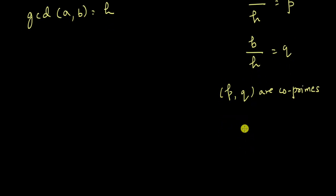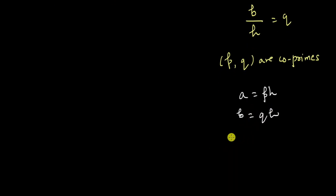Now what does this mean? This means that a is equal to p × h and b is equal to q × h. Now let us multiply k on both sides. This means that ka is equal to p × kh and kb is equal to q × kh. Okay, I think you can see where I am going with this.